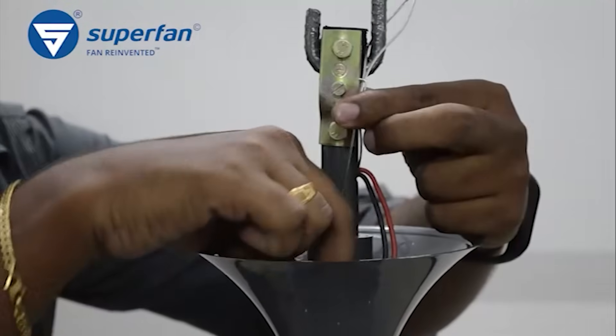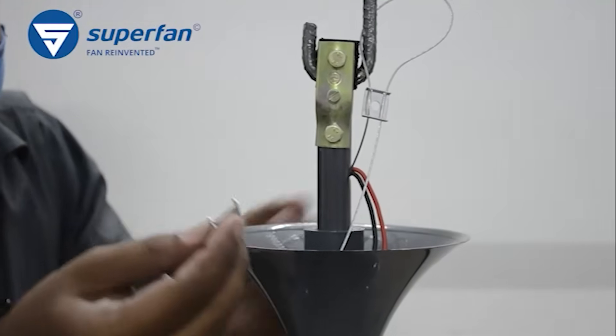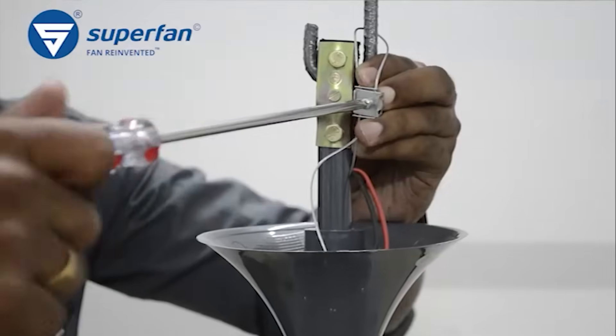Leave a slack on the loop such that the fan is not supported by the safety rope alone. Fasten the other piece of the metal clamp onto the looped piece using its screw and nut. This secures the safety rope.